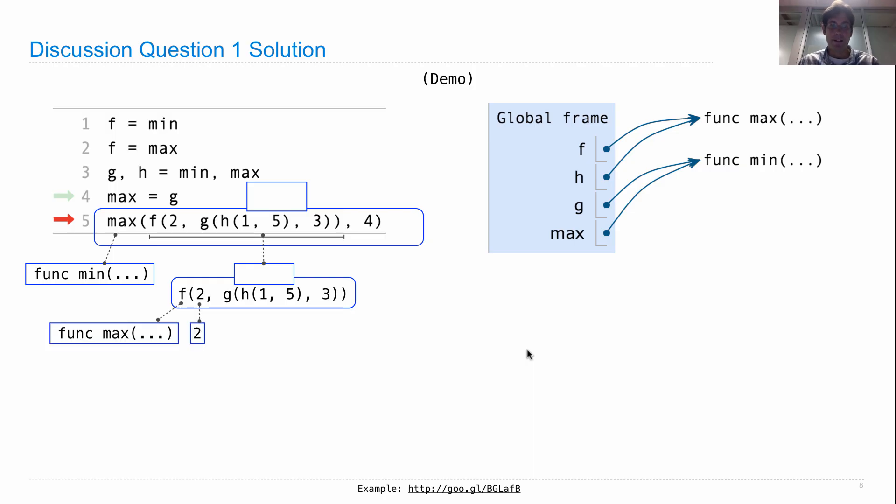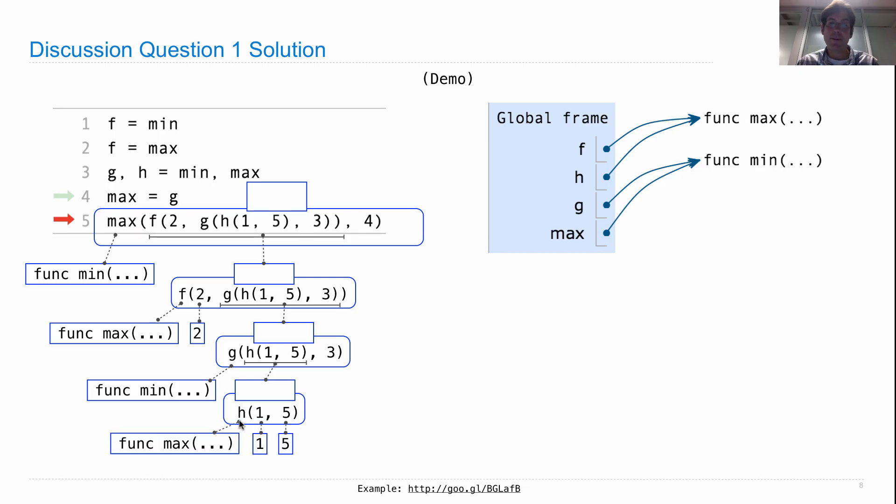And we have to apply our rule for evaluating call expressions again. Evaluate the operator, evaluate the operands. This operand is complex, so we evaluate it. G refers to the min. We see that here in the environment diagram. H1 and 5 is another call expression. We evaluate that by first evaluating the operator. H is the max function. 1 and 5 are 1 and 5. And so the max of 1 and 5 is 5. Now we take the min of 5 and 3 and we get 3. Now we're going to take the max of 2 and 3 and we'll get 3. And then we'll take the min of 3 and 4 and we will get 3. Which is the value of the whole thing.